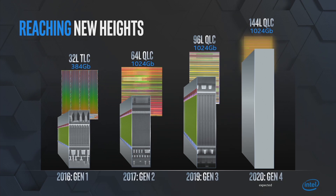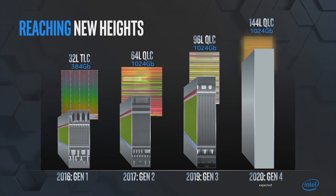That's a pretty big deal, but that's not all. You can see that in the second and third generation we have done QLC. We have learned from it, we have improved it, and on Gen 4 we are going to lead with QLC. More number of bits leads to aerial density, leads to more bits on a particular wafer or a particular rack. So not only do we have more layers, we have actually more bits per cell. That's our 144-tier technology, and we expect to have it in 2020.